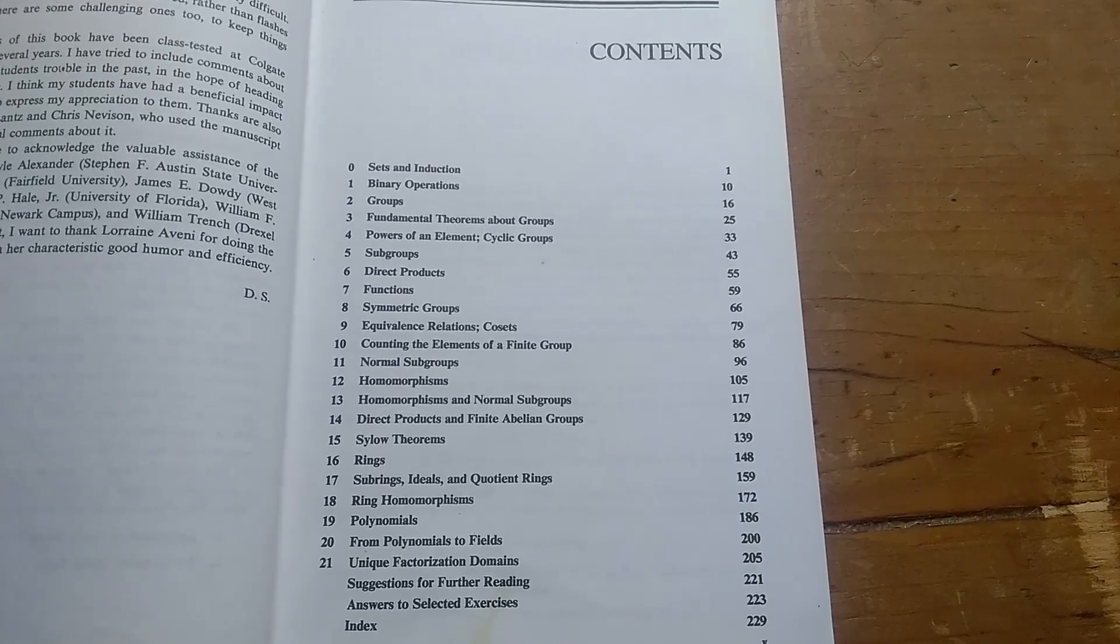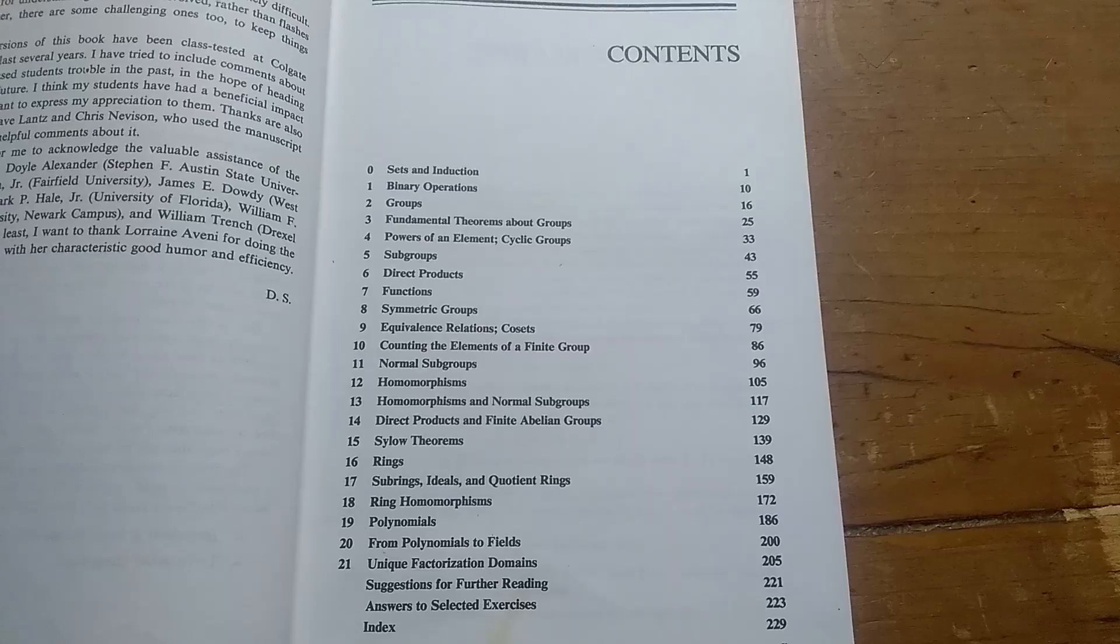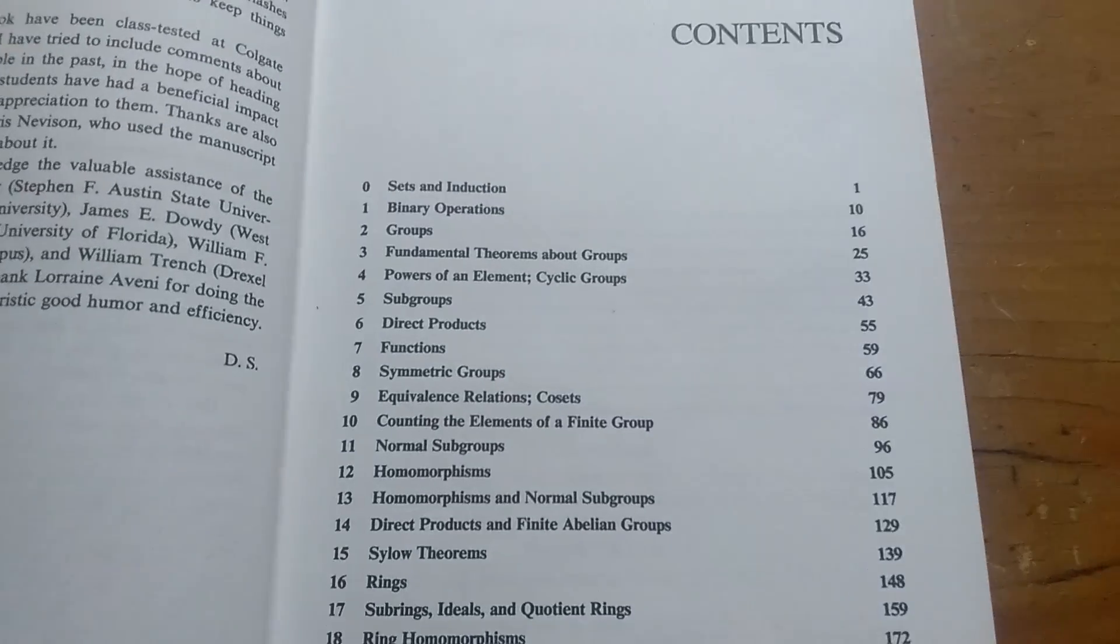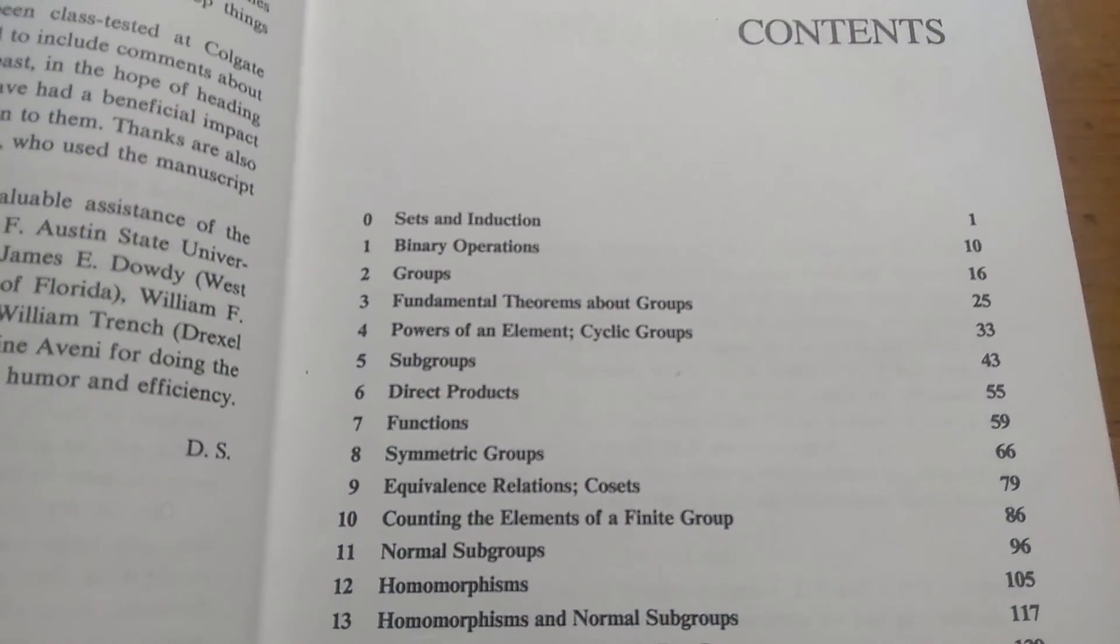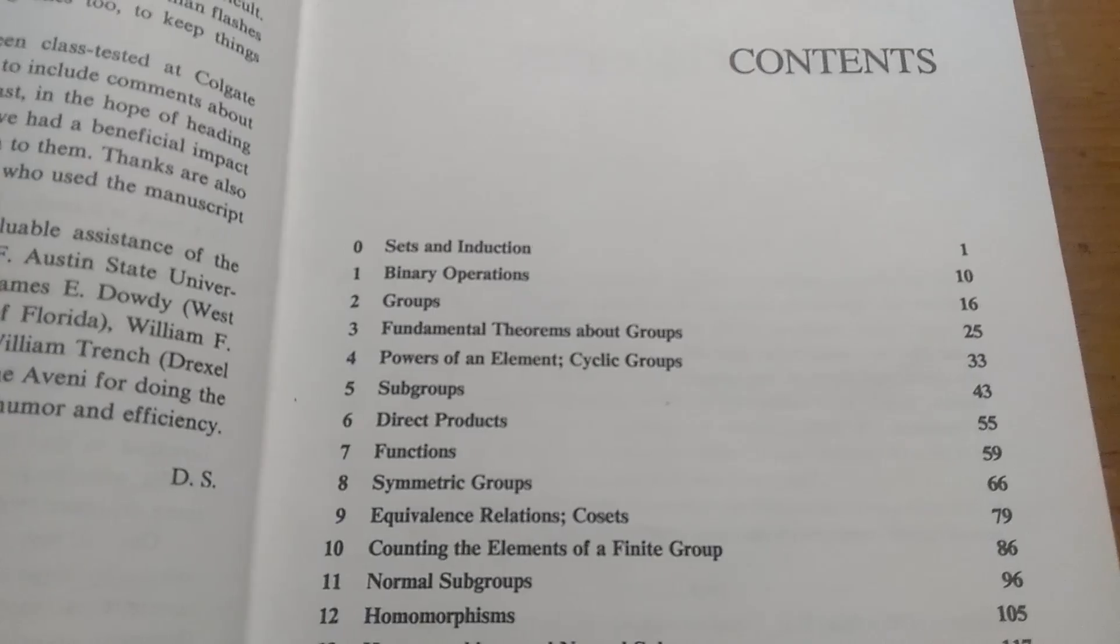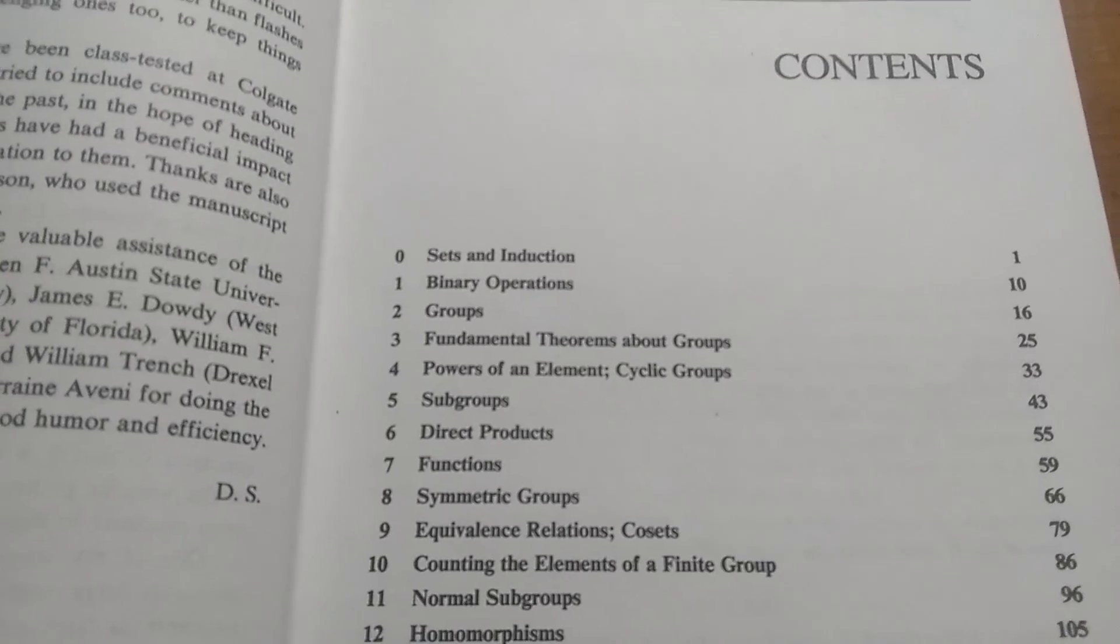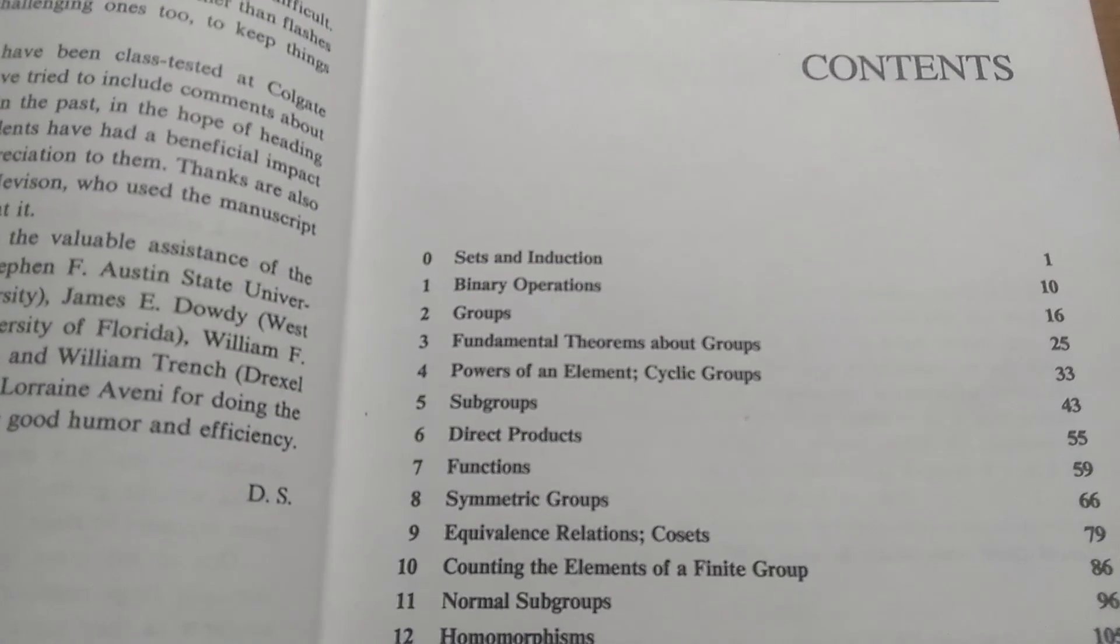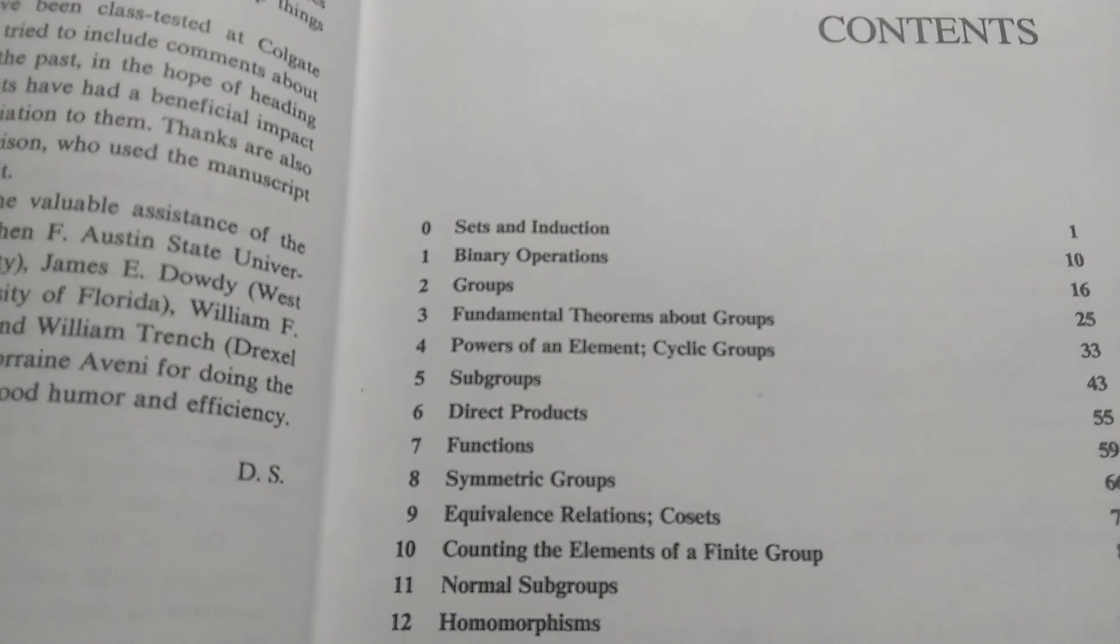So first, let's look at the Table of Contents. The Table of Contents is pretty standard. It starts off with sets and induction, which can be easily skipped if you already know the material. Then it jumps into binary operations, then groups,